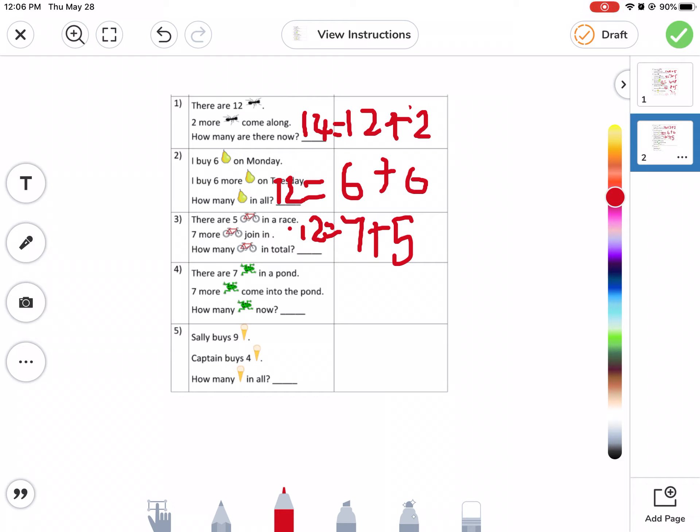There are seven frogs in a pond. Seven more come into the pond. How many now? Seven. Seven. Seven. Four. Team. Equals.